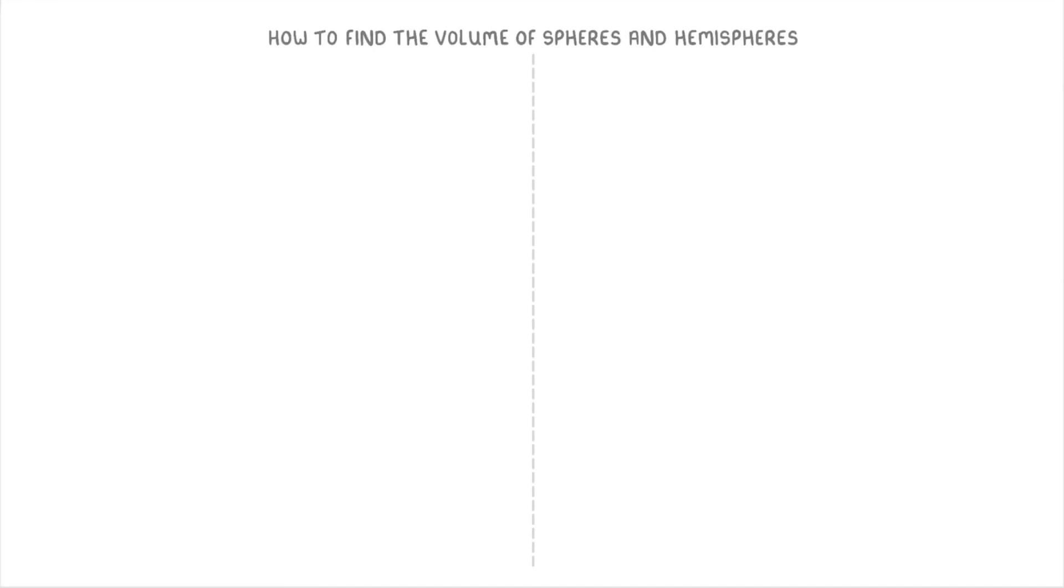In this video, we're looking at how to find the volumes of both spheres, which are tennis ball or football shapes, and hemispheres, which are basically spheres that have been cut in half.